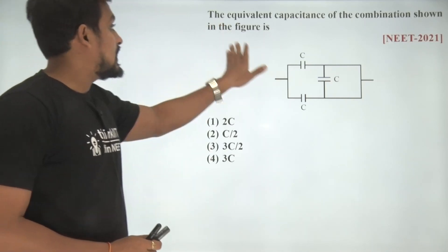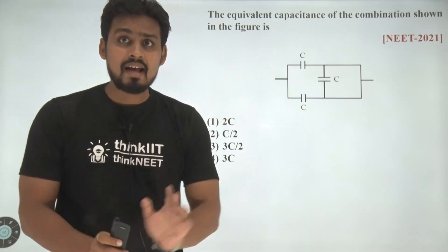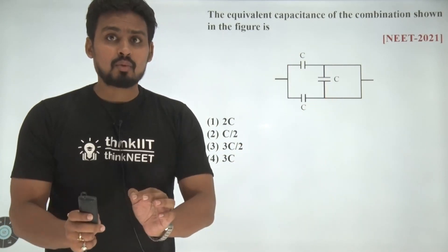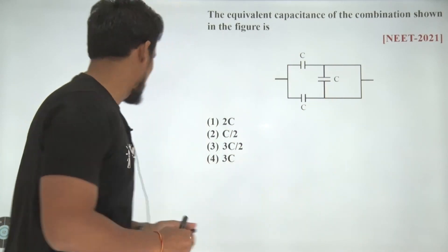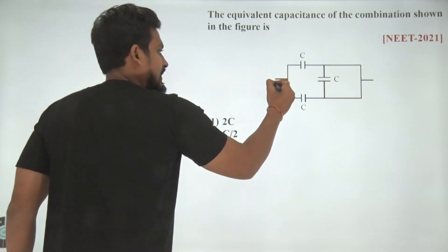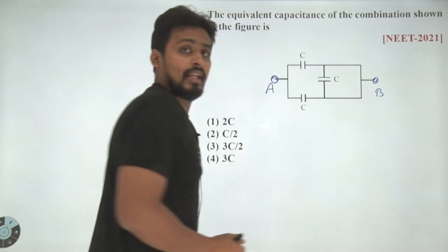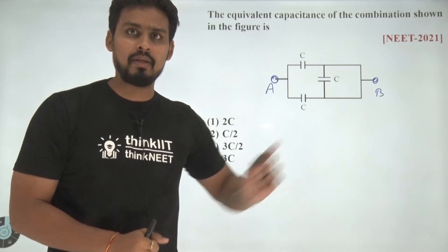The next question is: the equivalent capacitance of the combinations shown in the figure is. Now we have three capacitors being shown to us. We need to calculate the value of equivalent capacitance. These are the points. Let us name them. This is A and this is B.